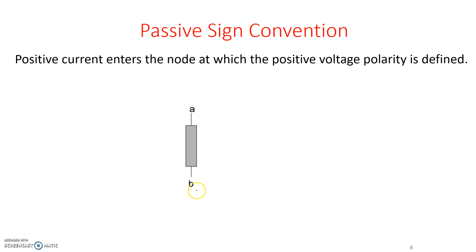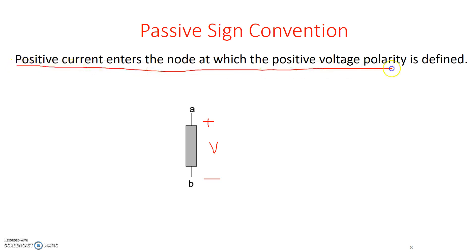A and B are the two labeled nodes. Let's say this particular passive element has a plus-minus voltage labeled so that the polarity is positive towards A and negative towards B. Passive sign convention says the positive current enters the node at which the positive voltage polarity is defined. So in this case, the direction of the current is determined by the polarity of the voltage we picked — current would be shown and drawn entering node A.